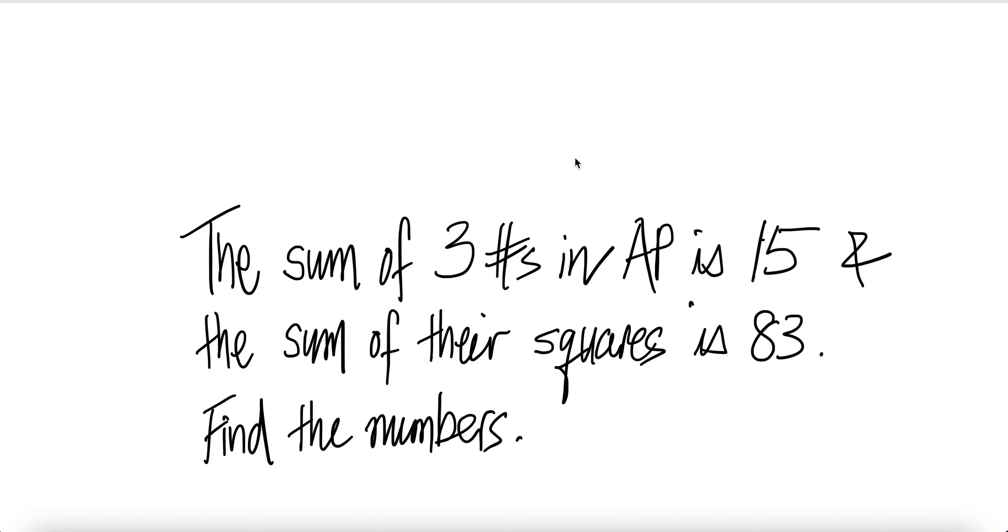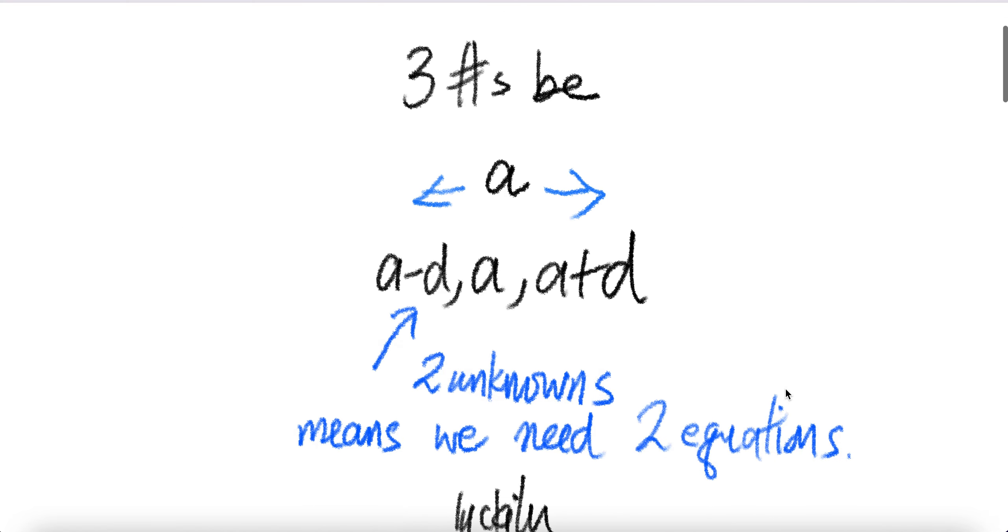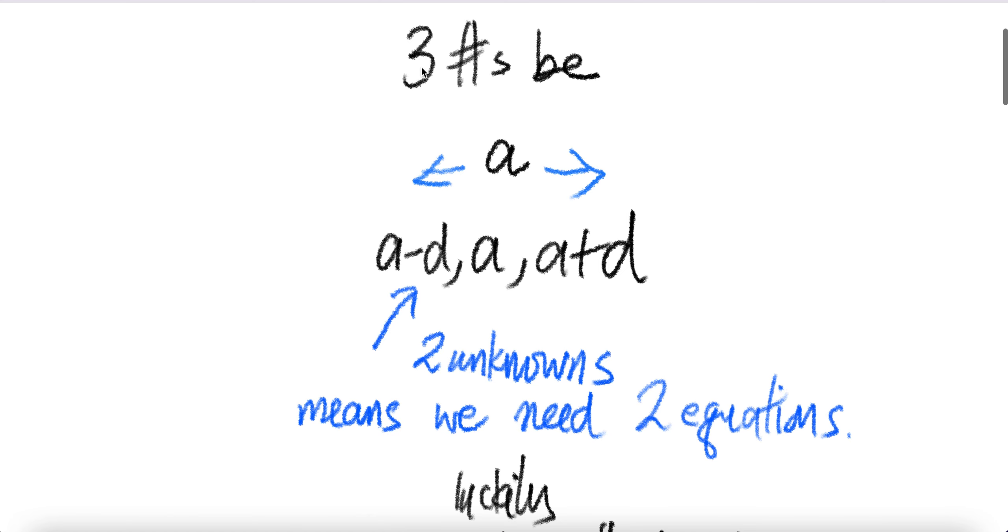So we are given sum 15, sum of the square of the three numbers is 83. The three numbers, let us make them be: one of them is A, and then we make the one to the left is A minus D, and the one to the right is A plus D.